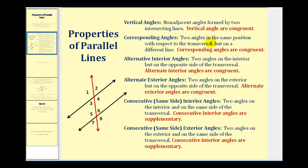Corresponding angles are two angles in the same position with respect to the transversal, but on a different line, and these angles are also congruent. So if we view angle one as being in the upper left-hand corner of the intersection of the transversal and the first black line, angle five is also in the upper left-hand corner of the intersection of the transversal and the second black line. These are corresponding angles, and they are also congruent angles.